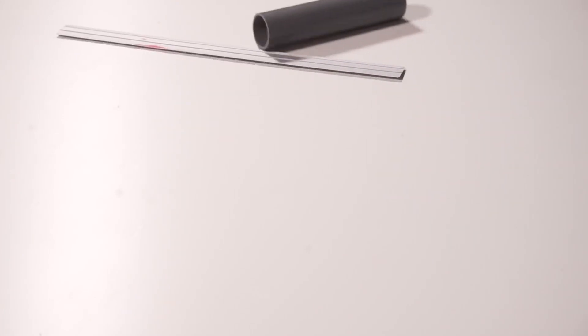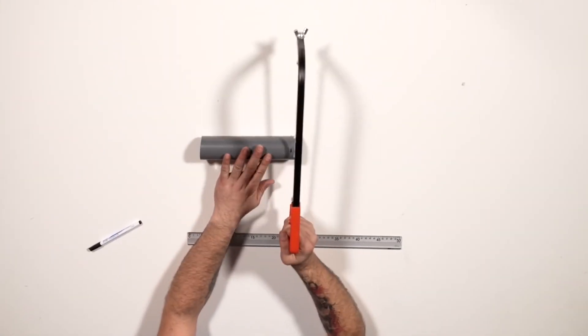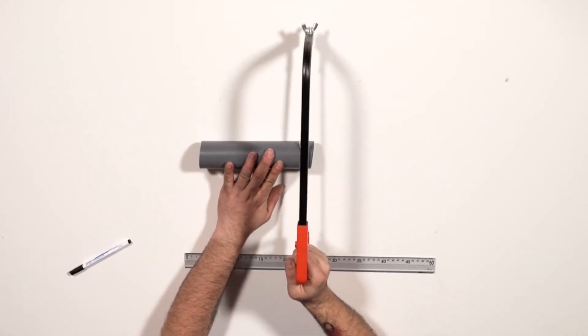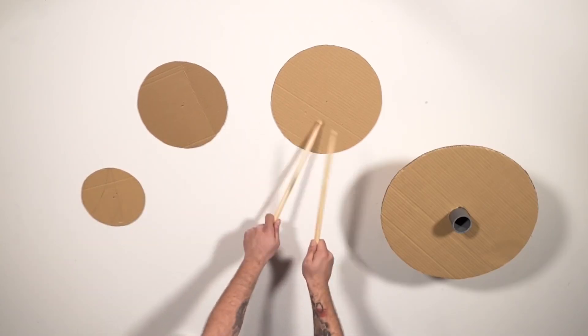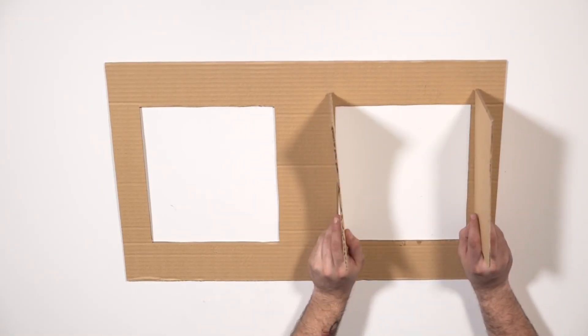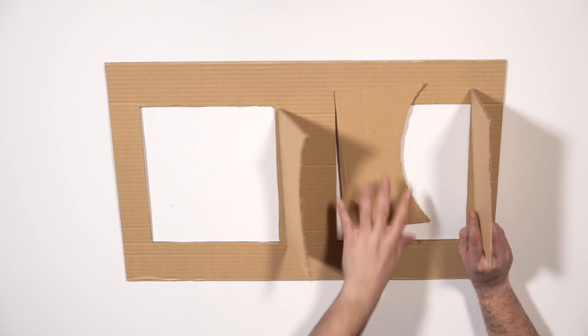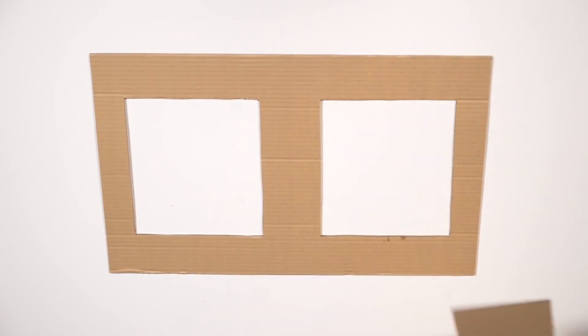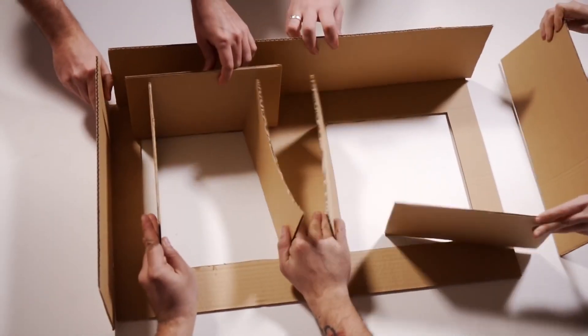To make the waist, we first cut a PVC tube to 20cm. This is the piece that will connect both legs. Then, we will join these pieces together. There we have it. The Avengers assemble.